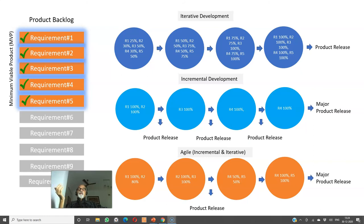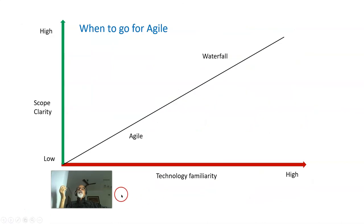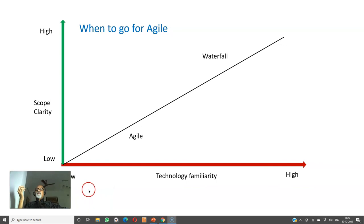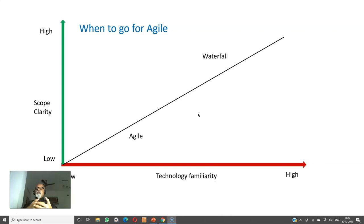So we discussed waterfall, iterative development, incremental, and agile. Now, when to go for agile and when to go for waterfall: if the technology familiarity is very high and the scope clarity is also very high, then it is better to go with waterfall. If the scope clarity is very low and the technology familiarity is also very low, then it is better to go with agile project management. And sometimes even within waterfall, we try to implement some agile best practices and processes, and then it becomes a hybrid kind of model.